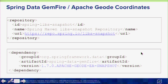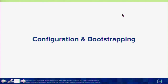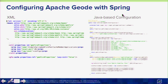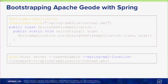Here are the Maven coordinates to get Apache Geode through Spring Data GemFire. By default, Spring Data GemFire works with Pivotal GemFire, but there's a specific version that allows you to work with Spring and Apache Geode together — currently in snapshot version since Apache Geode hasn't had its first official release yet. Bootstrapping can be done through Spring Boot or via the GFSH command line, using either native config or Spring XML config specified via the Spring XML Location option.